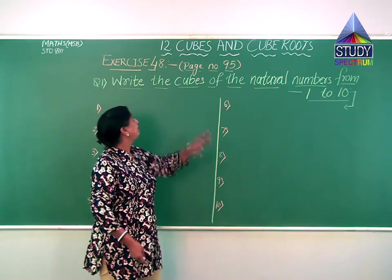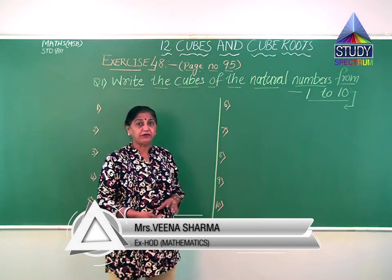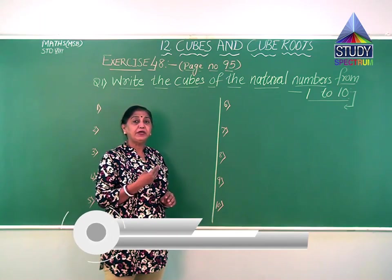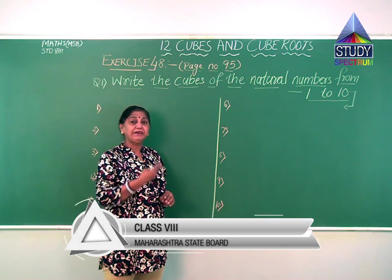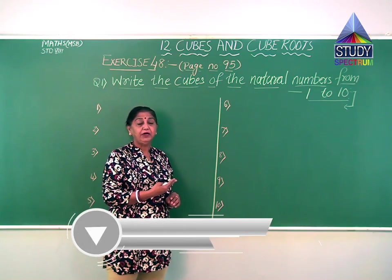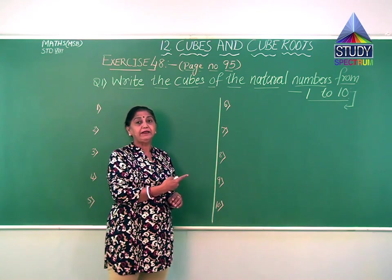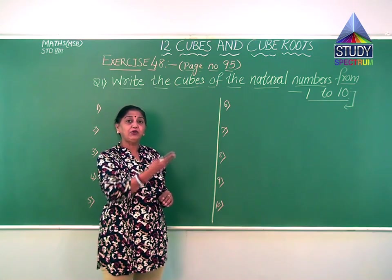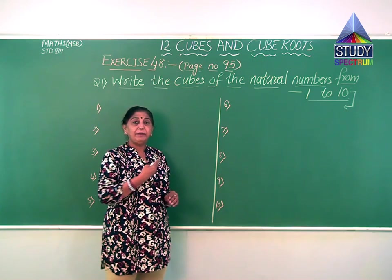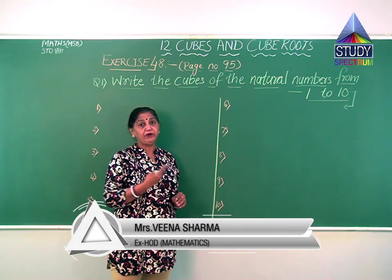Now children, we will move to exercise 48, which is on page number 95 of your textbook. As you know, what is a cube? Cube means taking the product of a number — you have to multiply the same number three times. When we say cube, it means 3 times the same number. We have seen in the example that 2 cube means 2 into 2 into 2, and that will give me 8. So 8 is the cube of 2. You write it as 2 raised to 3, where 2 is the base and 3 is the index or power.